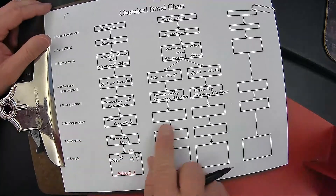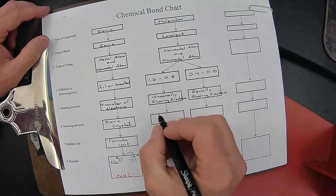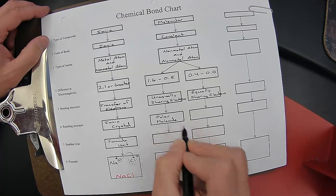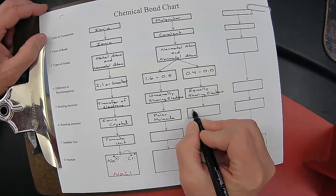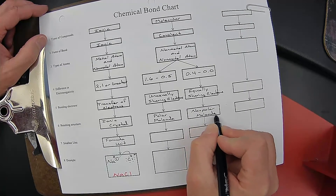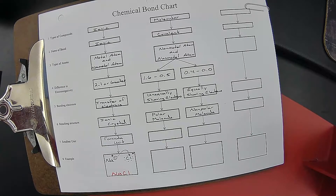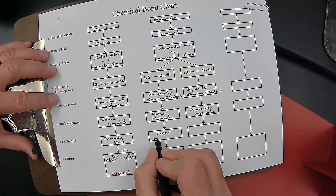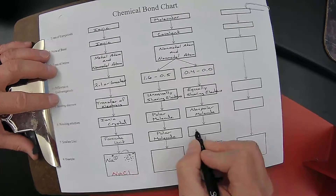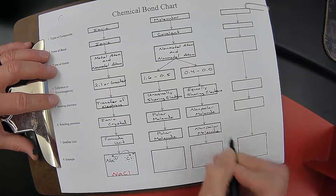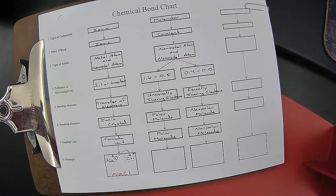The resulting structure from unequal sharing is called a polar molecule, versus a non-polar molecule from equal sharing. The smallest unit is the molecule itself — a polar molecule versus a non-polar molecule.